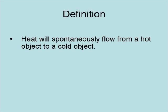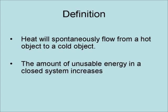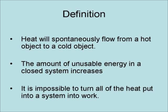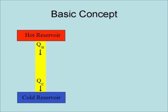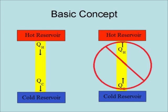According to the second law of thermodynamics, heat will spontaneously flow from a hot object to a cold object. The amount of unusable energy in a closed system always increases. It is impossible to turn all of the heat put into a system into work. The basic concept behind the second law of thermodynamics is the fact that heat always spontaneously flows from hot to cold. It never spontaneously flows from cold to hot.